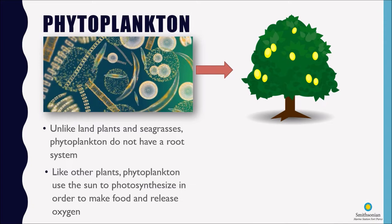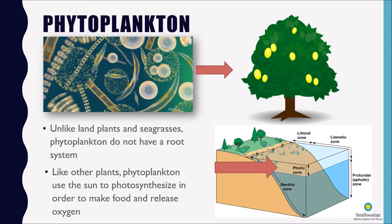And about half of the oxygen that we breathe here on earth actually comes from phytoplankton in the water. Now we tend to find phytoplankton in a region called the photic zone which is the first layer of water in a body of water because the phytoplankton need to be near enough to the surface in order to photosynthesize.